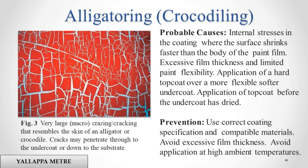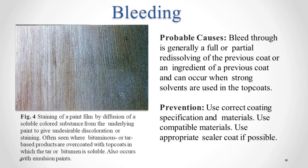Alligatoring / Crocodiling. Probable causes: internal stresses in the coating where the surface shrinks faster than the body of the paint film. Excessive film thickness and limited paint flexibility. Application of a hard top coat over a more flexible softer undercoat. Application of top coat before the undercoat has dried. Prevention: use correct coating specification and compatible materials. Use appropriate seal coat if possible.